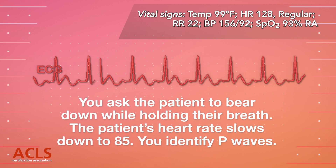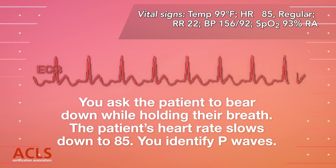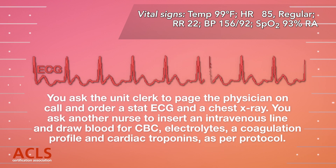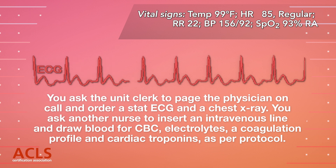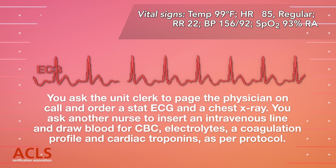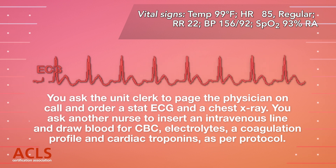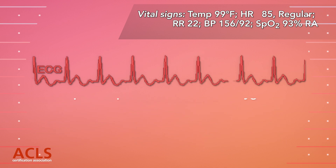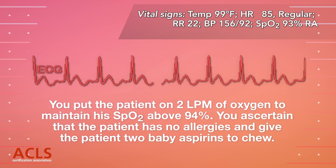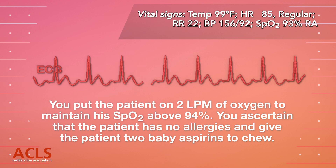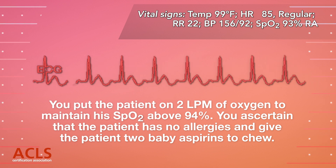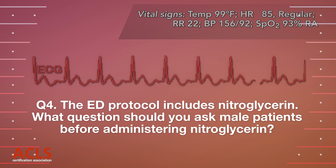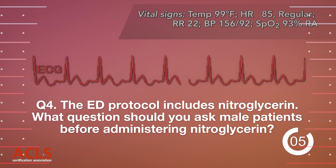You ask the patient to bear down while holding their breath. The patient's heart rate slows down to 85 and you identify P waves. You ask the unit clerk to page the physician on call and order a STAT ECG and a chest x-ray. You ask another nurse to insert an intravenous line and draw blood for CBC, electrolytes, a coagulation profile, and cardiac troponins, as per protocol. You put the patient on 2 liters of oxygen to maintain his O2 saturation above 94%. You ascertain that the patient has no allergies and give the patient 2 baby aspirins to chew. The ED protocol includes nitroglycerin. What question should you ask male patients before administering nitroglycerin?